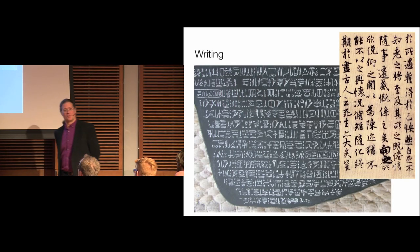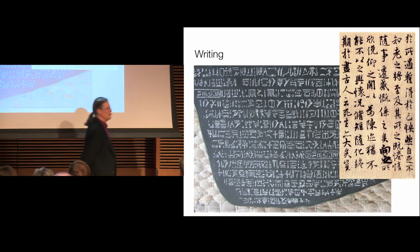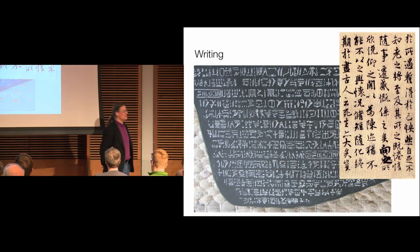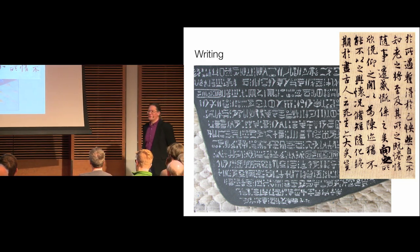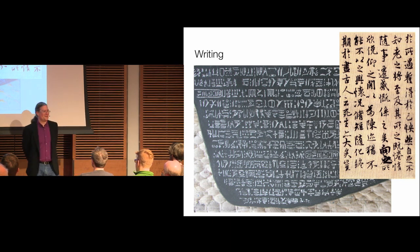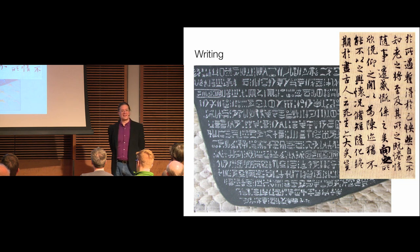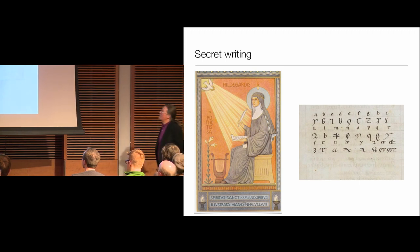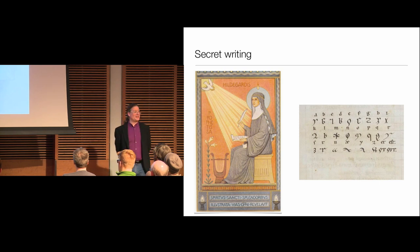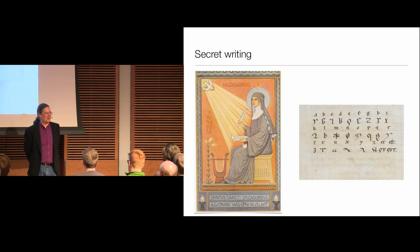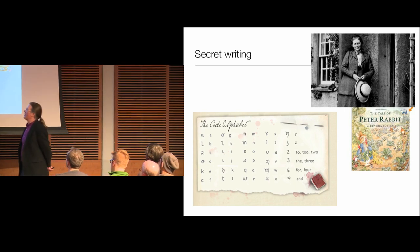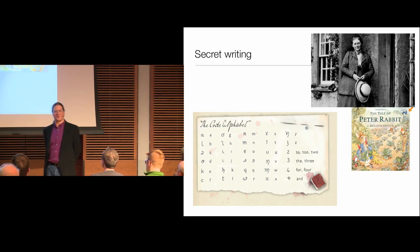Writing lets us read the thoughts of people who are thousands of miles away or who lived thousands of years ago. But what if what you want to write is intended only for your eyes and those of your friends? Then you need some kind of system of your own. The idea of secret writing is almost as old as writing itself. One favorite example is the Christian mystic Hildegard of Bingen, who invented a language and alphabet called the lingua ignota — unknown language — in which to record her revelations. Another is that Beatrix Potter, from the age of 15, wrote her journal in a secret alphabet, presumably so she could be more candid about certain people.